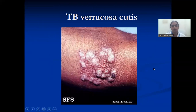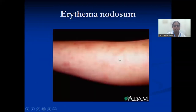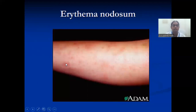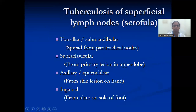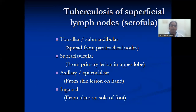Skin tuberculosis includes TB verrucosa cutis, and erythema nodosum — you can see the red-colored areas. Tuberculosis of superficial lymph nodes is called scrofuloderma. This can happen in tonsillar or submandibular lesions, supraclavicular, axillary, epitrochlear, and inguinal lesions — these are areas affected by superficial lymphadenopathy.